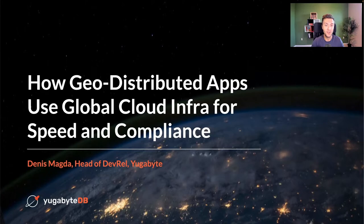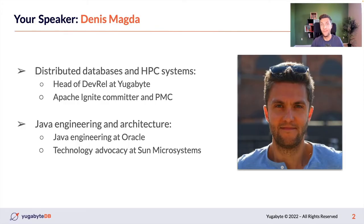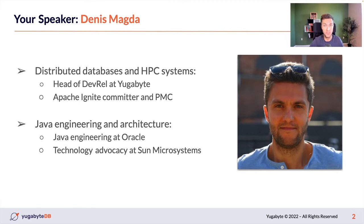Before we start, a little bit about myself. My name is Denis Magda. For the last eight-plus years, I've been working with distributed databases and high-performance computing systems. Presently, I am the head of developer relations at YugabyteDB. YugabyteDB is a distributed SQL database that is built on PostgreSQL source code. Before YugabyteDB, I worked and contributed to the Apache Ignite community that develops another distributed database, which is designed for high-performance and in-memory computing.